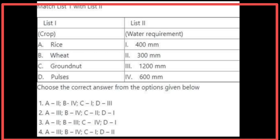Matching List 1 with List 2 for crop water requirements: The water requirement of rice is 1200 mm, wheat is 600 mm, groundnut is 400 mm, and pulses is 300 mm. The correct option is the fourth option.